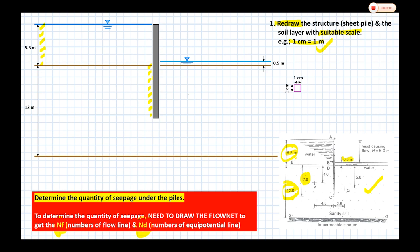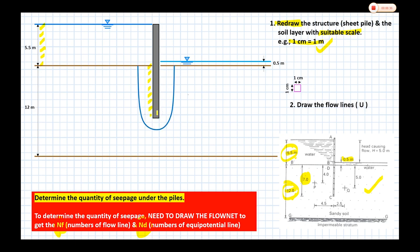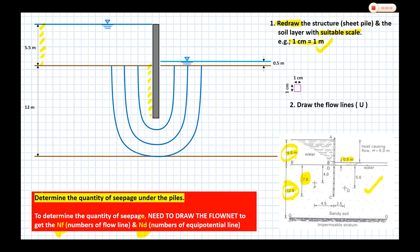Once the layout of the structure and soil layer is complete, let's draw the flow net. Draw the flow lines first. Make sure there is a gap — there should be space for the water to flow, so the flow line should not touch directly against the sheet pile with no gap. You can have more than two flow lines.